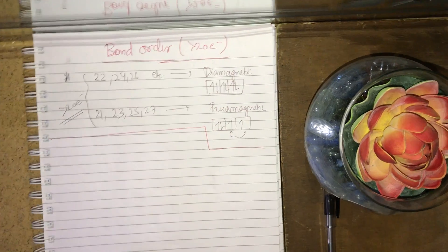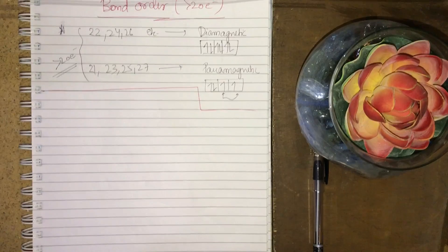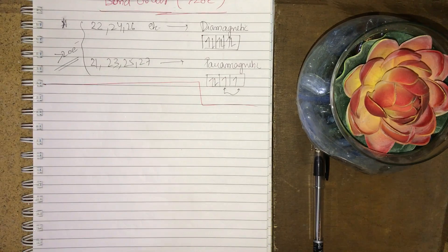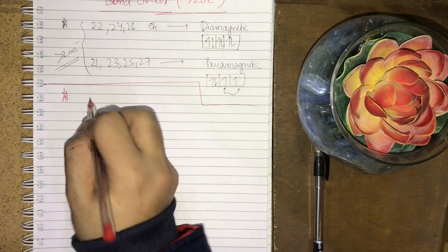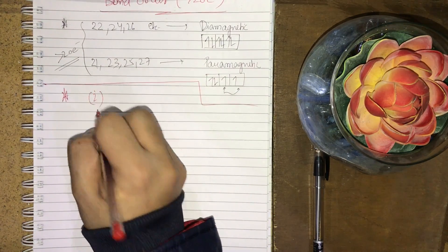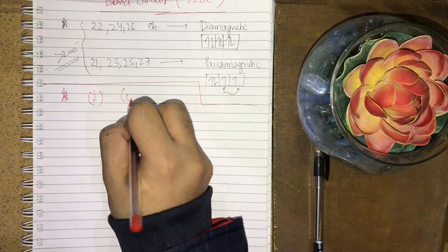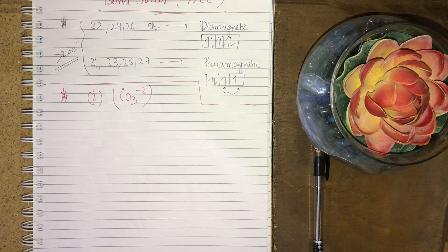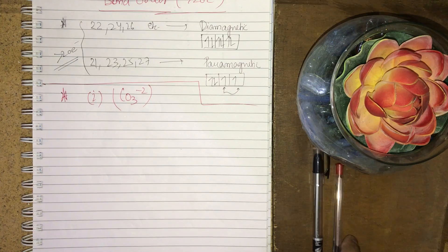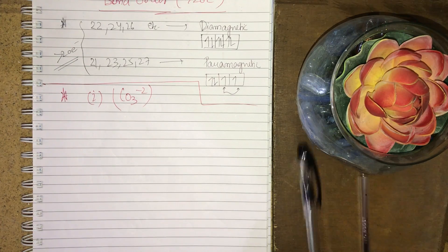For less than or equal to 20 electron species, I have already covered bond order in the molecular orbital theory video. The first example I would like to take is CO₃²⁻. This is a greater than 20 electron species, and we will depend upon the phenomenon of resonance for finding the bond order.